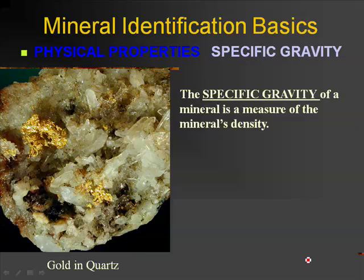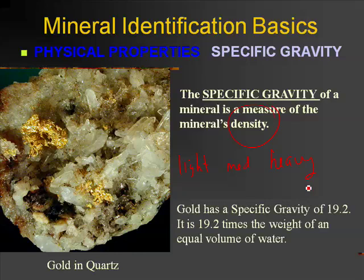The specific gravity of a mineral is the mass of a mineral compared to the mass of an equal volume of water — in other words, it's the density. We're going to divide all minerals into three categories: light, medium, and heavy. Many minerals that contain metals tend to be much heavier than other minerals, so when you pick them up and heft them, you can tell. The heaviest mineral you're likely to encounter is gold — it's 19.2 times heavier than the same volume of water. That's why you can pan for gold: the water pushes away the less dense minerals, usually quartz, leaving the dense gold behind.